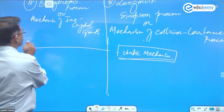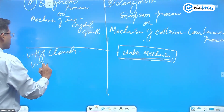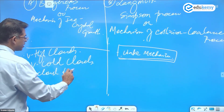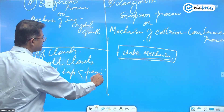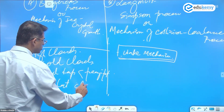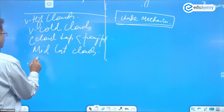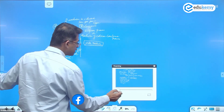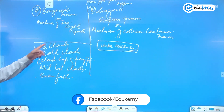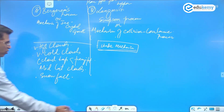Bergeron's Process operates for very high clouds and very cold clouds — where the cloud temperature is less than the freezing point. This operates for mid-latitude clouds. It largely happens for snowfall; rains can also occur, but it largely results in snowfall.